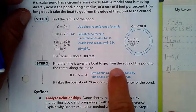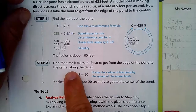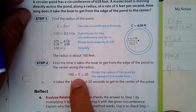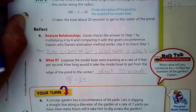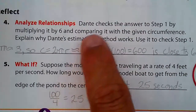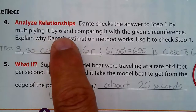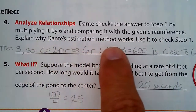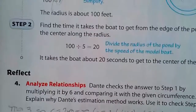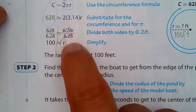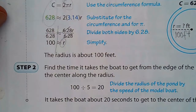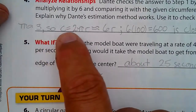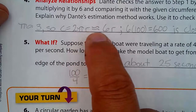Step 2: find the time. The radius is 100 feet and the boat moves at 5 feet per second. So 100 divided by 5 equals 20 seconds to reach the center. Dante checks step 1 by multiplying the radius by 6 and comparing to the given circumference. This works because pi is about 3, so 2π ≈ 6, making C ≈ 6r. Six times 100 is 600, which is close to the circumference of 628 — that checks out pretty well.